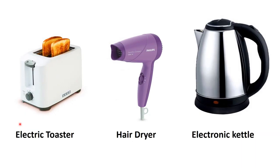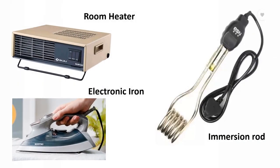Let's have a look at some of the commonly used electrical appliances which work on the heating effect of current. The first one is an electric toaster, next a hair dryer, after it an electronic kettle. Few other devices like a room heater, an electronic iron and an immersion rod. These appliances also make use of the heating effect.